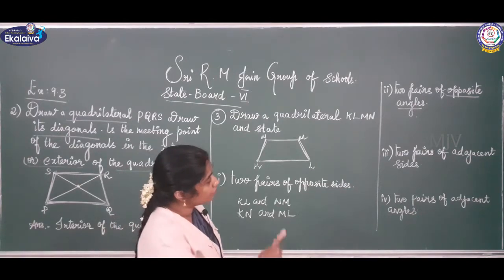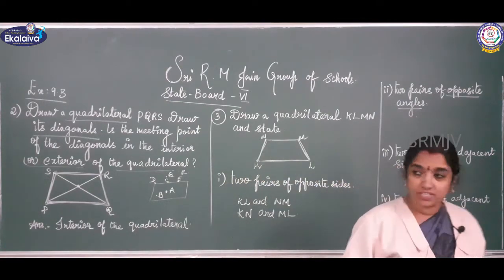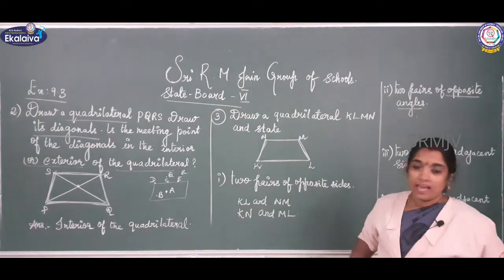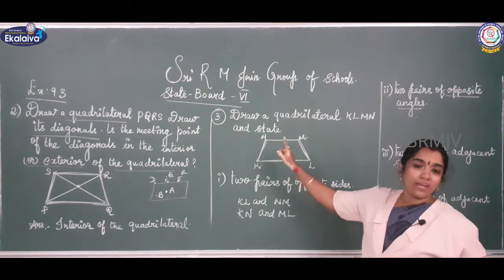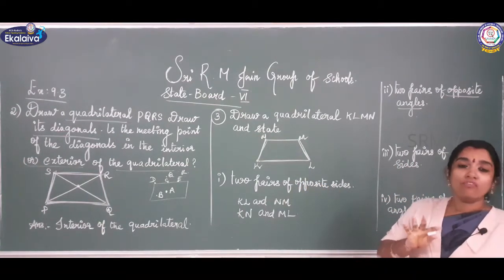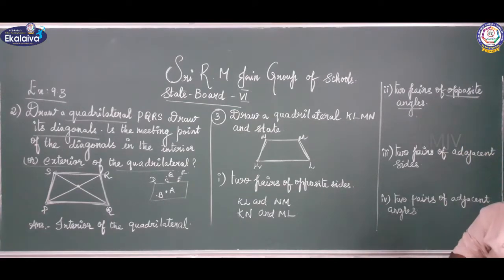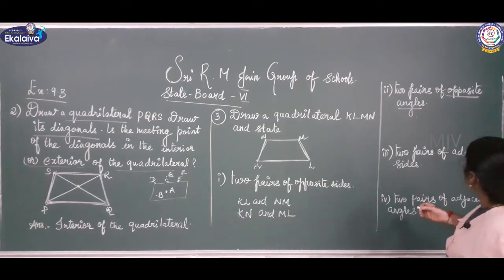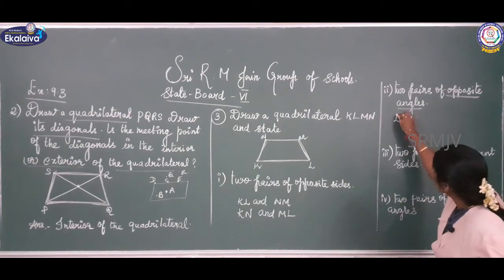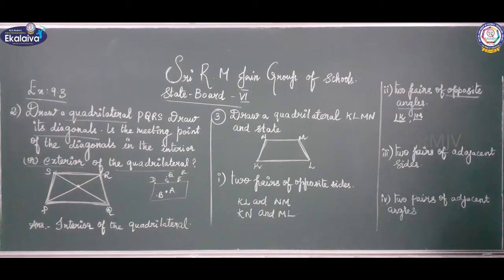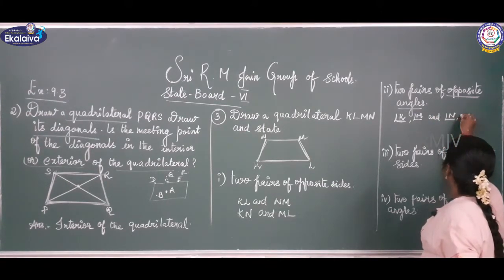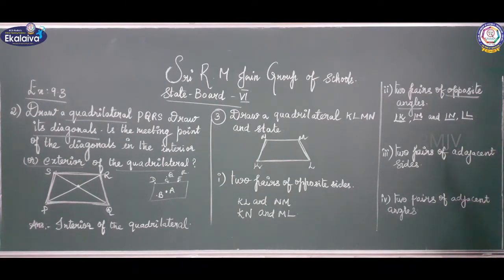Now moving further - 2 pairs of opposite angles. A quadrilateral has 4 angles: angle K, angle L, angle M, and angle N. The 2 pairs of opposite angles are: angle K and angle M, and angle N and angle L.